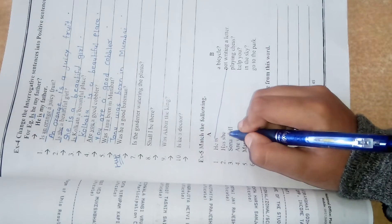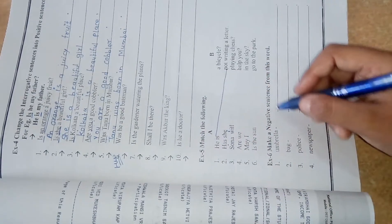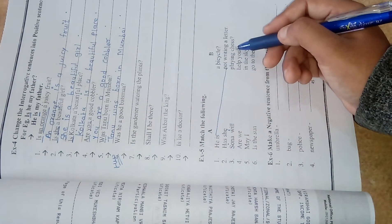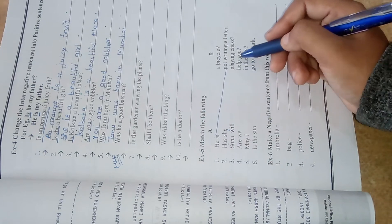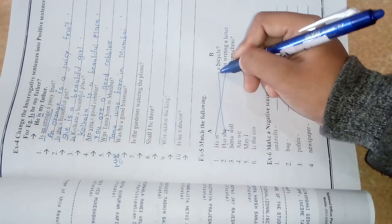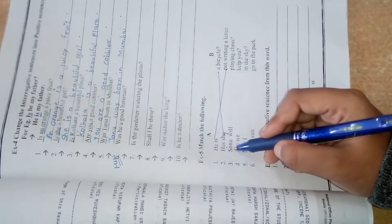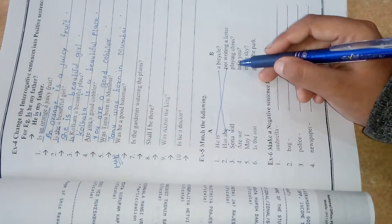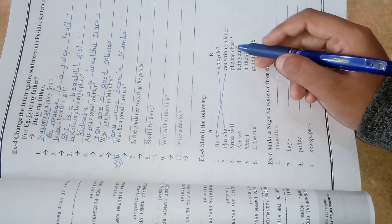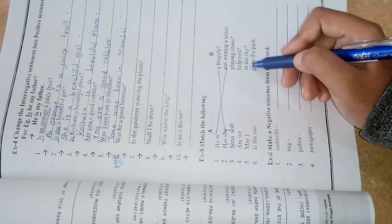Two. Has she. Now this is a question. A bicycle, playing chess, help you? Has she a bicycle? Three. Sona will playing chess help you in the sky?